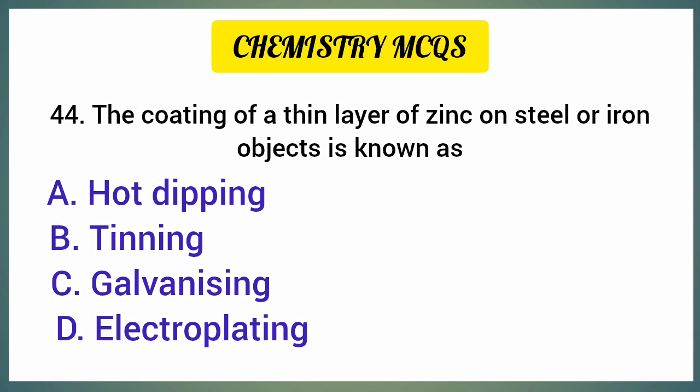The coating of a thin layer of zinc on steel or iron objects is known as — correct option is option C: Galvanizing.